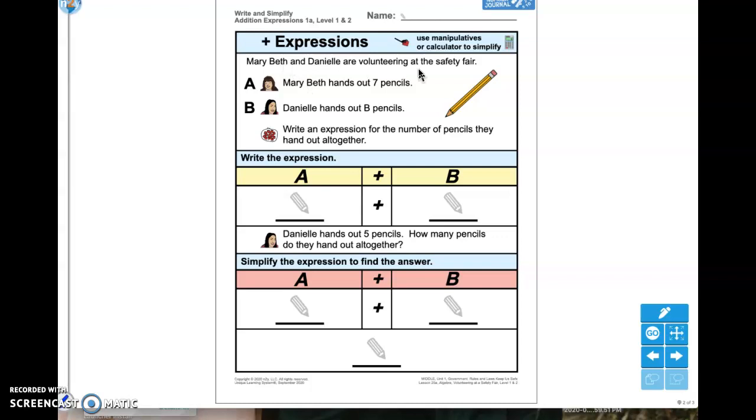So Mary Beth and Danielle are volunteering at the safety fair. Mary Beth hands out 7 pencils. And it shows us right here that Mary Beth is going to be A. Danielle is going to be B in our equation. Danielle hands out B pencils. So what we notice right here is that we don't know what B is yet. So we're going to write this expression or write our number sentence. A, we can reference up here, A is 7. So I'm going to type in the number 7.